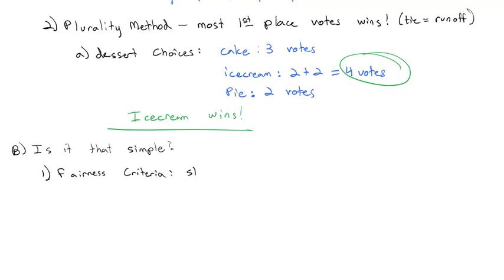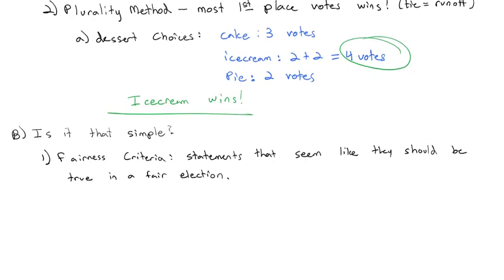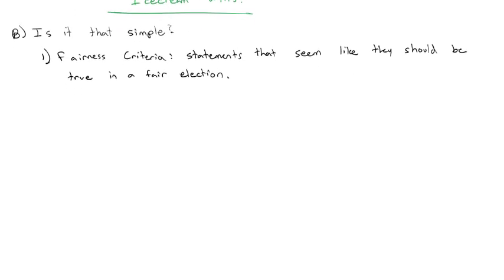And these are simply statements that seem like they should be true. And one of the biggest issues when it comes to fairness criteria is the Condorcet criterion.